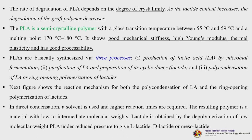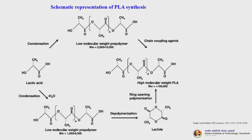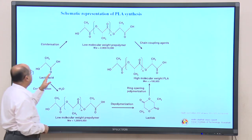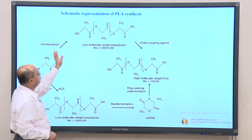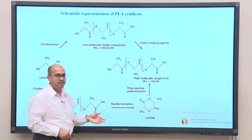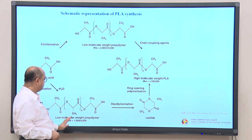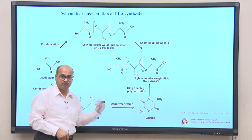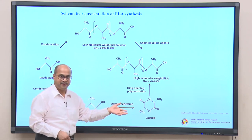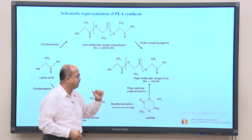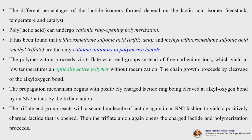In direct condensation, a solvent is used and higher reaction times are required, resulting in a material with low to intermediate molecular weights. Lactide is obtained by depolymerization of low molecular weight PLA under reduced pressure to give L-lactide, D-lactide or mesolactide. The schematic representation of PLA synthesis shows two routes from lactic acid: condensation giving low molecular weight pre-polymer, which with chain coupling agents gives high molecular weight PLA; or condensation to low molecular weight pre-polymer, depolymerization to lactide, and ring opening polymerization to give high molecular weight PLA. The different percentages of lactide isomers depend on the lactic acid isomer feedstock, temperature and catalyst.